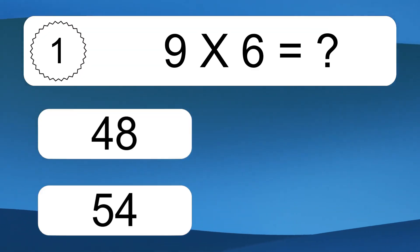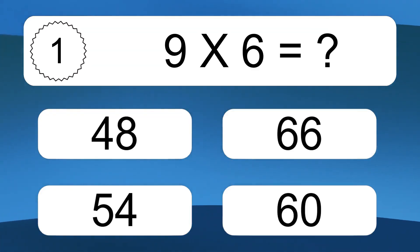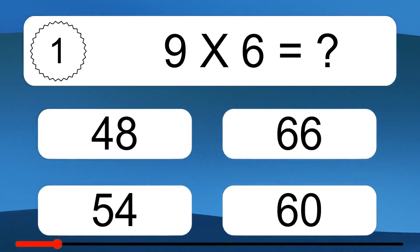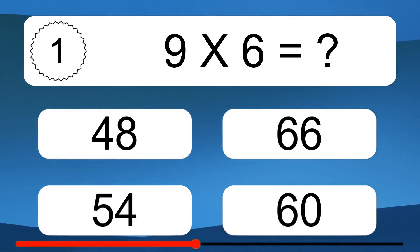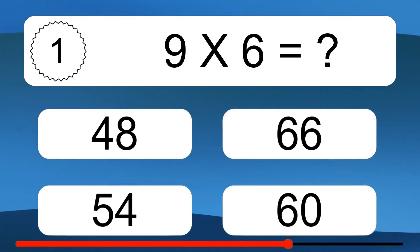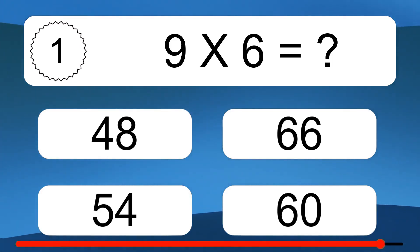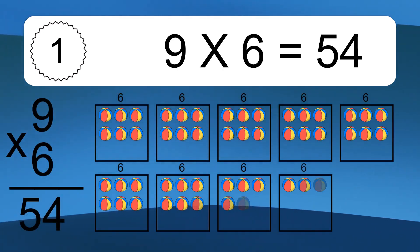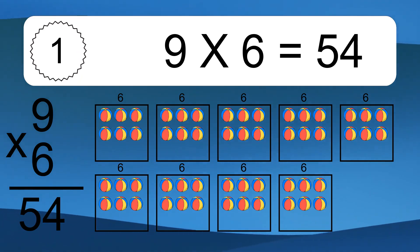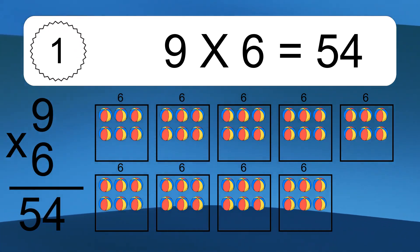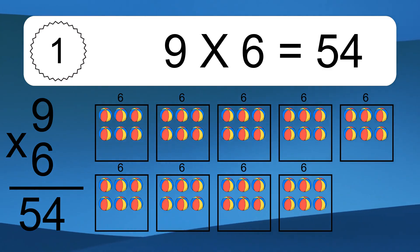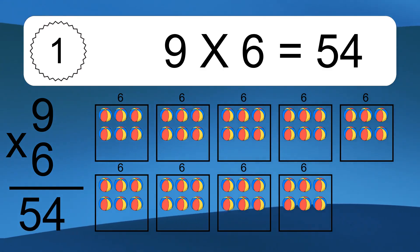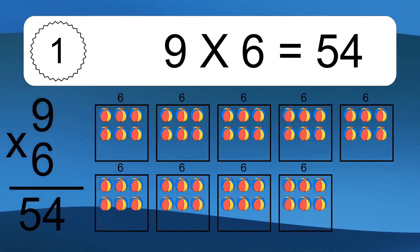Nine times six equals what? Nine times six equals 54. We have nine boxes, and each box has six colorful balls inside. If you count all the balls in all the boxes together, you will have nine times six balls. This equals 54 balls.